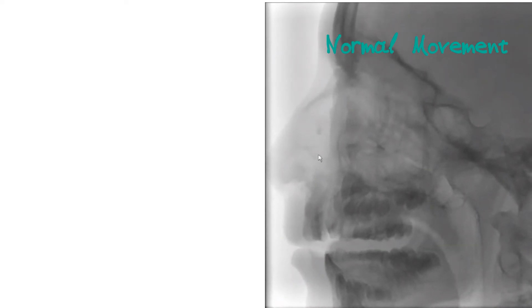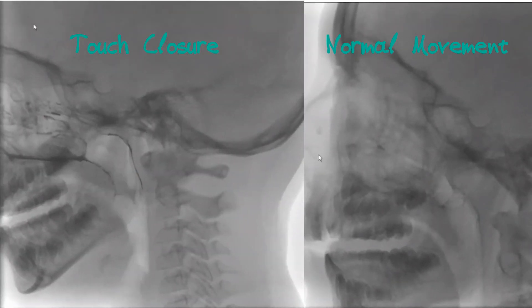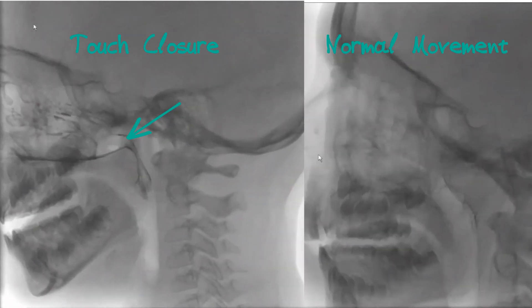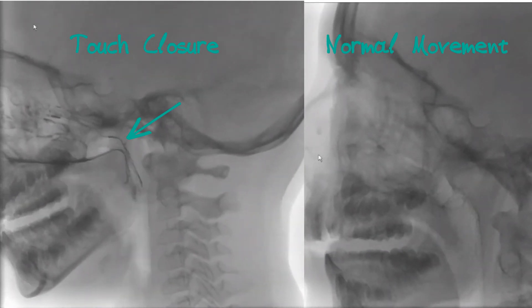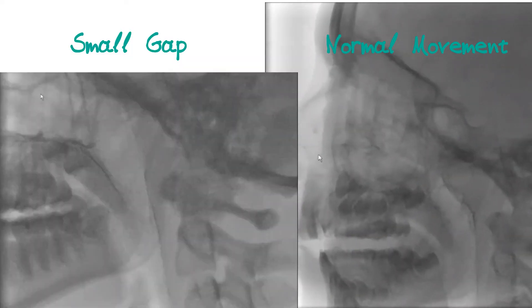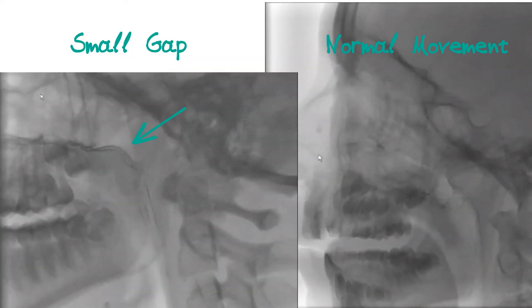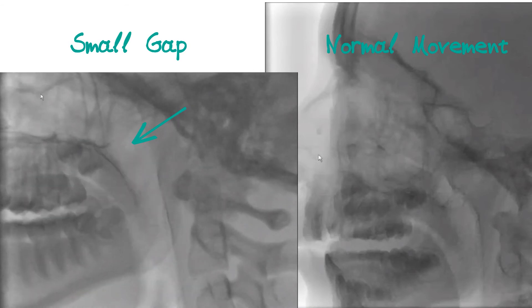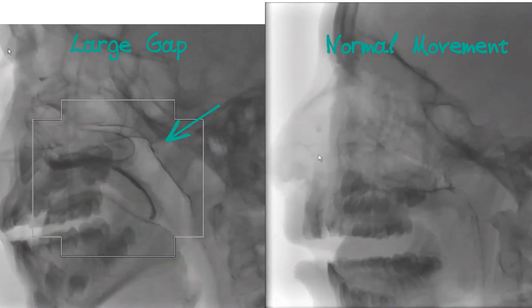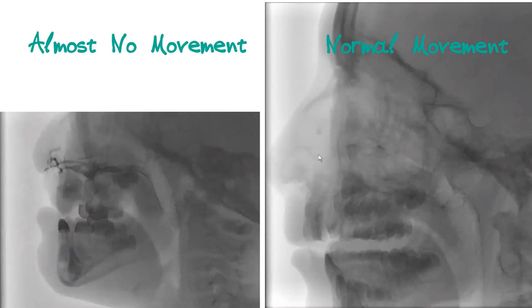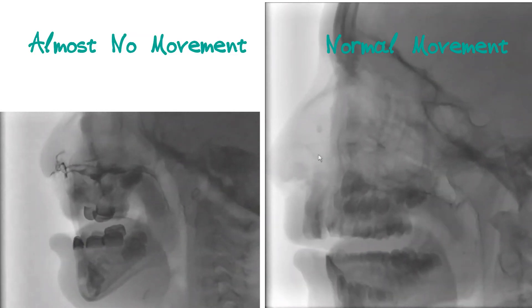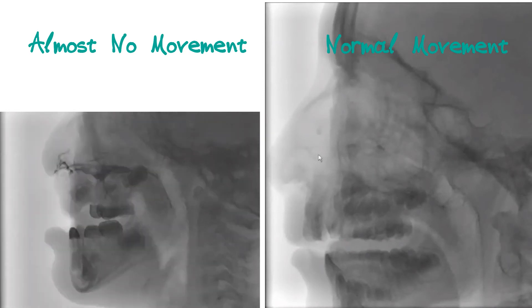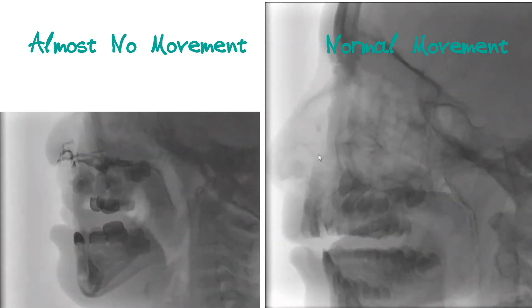Here are some examples of how this imaging can show problems with this valve system. Here is an example of touch closure, where the soft palate just about reaches the back of the throat, but not with enough force to act as an effective valve. Now an example of a small consistent gap and a larger consistent gap. And finally, an example of a palate that really isn't moving well at all. The information from this study can help to show which type of surgery is most likely to help for the individual child.